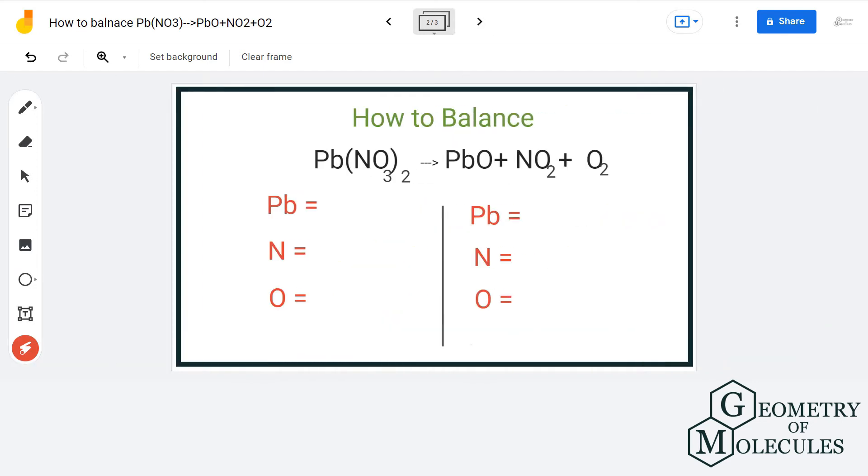To balance this equation, first we will look at the total number of atoms on both sides. On the reactant side, we have one lead, two nitrogen, and six oxygen atoms.